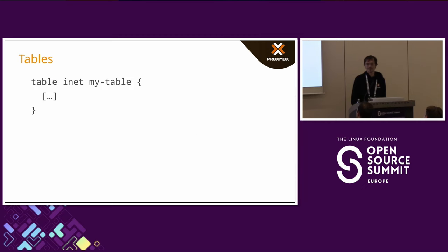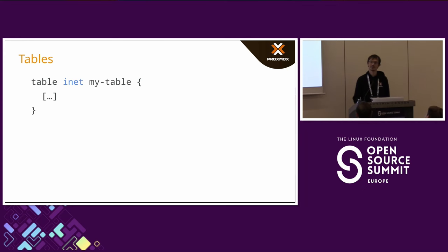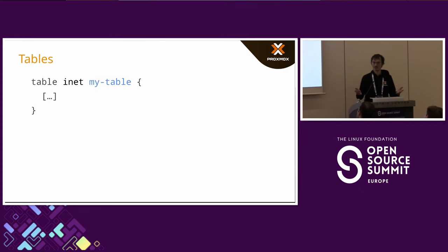The top-level object in NF Tables is always a table. A table contains every other object like chains, but also the generic data structures I mentioned, like sets or maps. It always has a type — in this case, inet, which means it can filter IPv4 or IPv6 traffic at the same time. If you wanted bridge filtering, there's a bridge type, an ARP type, a netdev type, and several others. Every object in NF Tables has a name — in this case, 'my_table'.